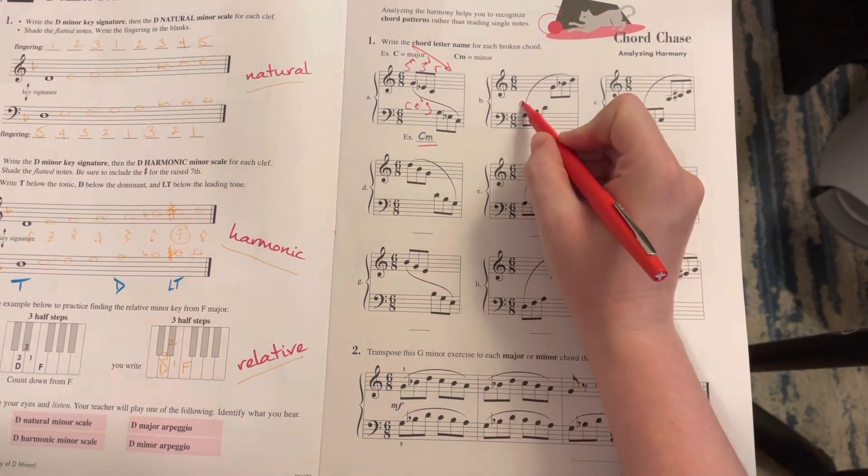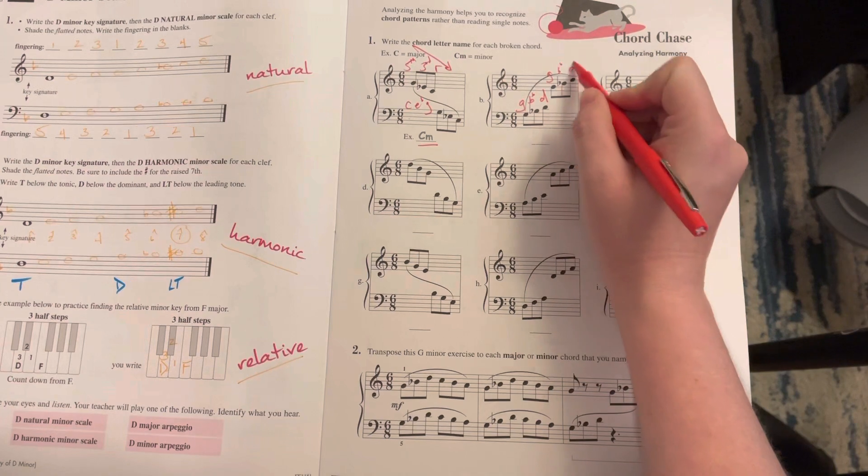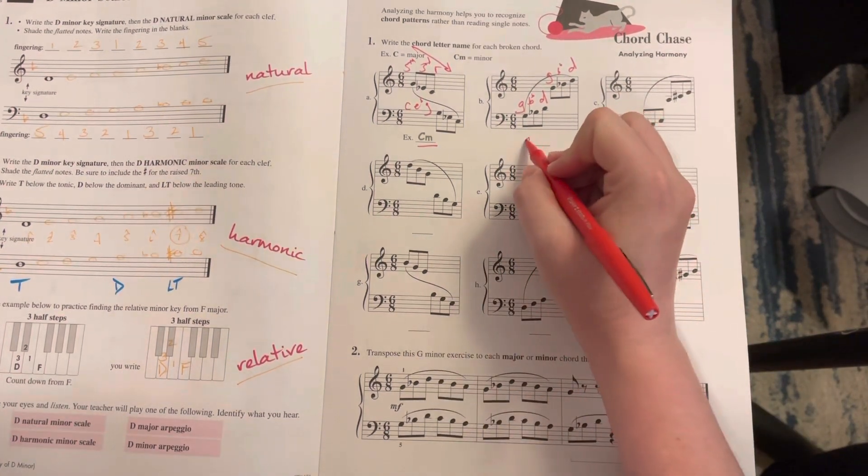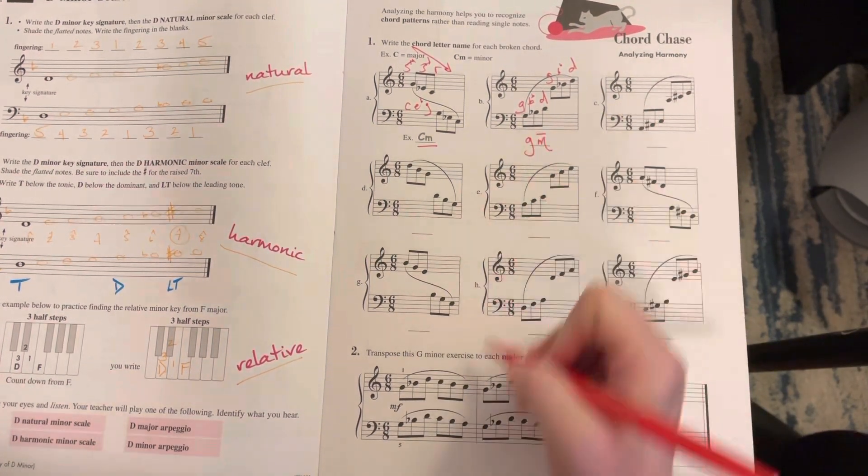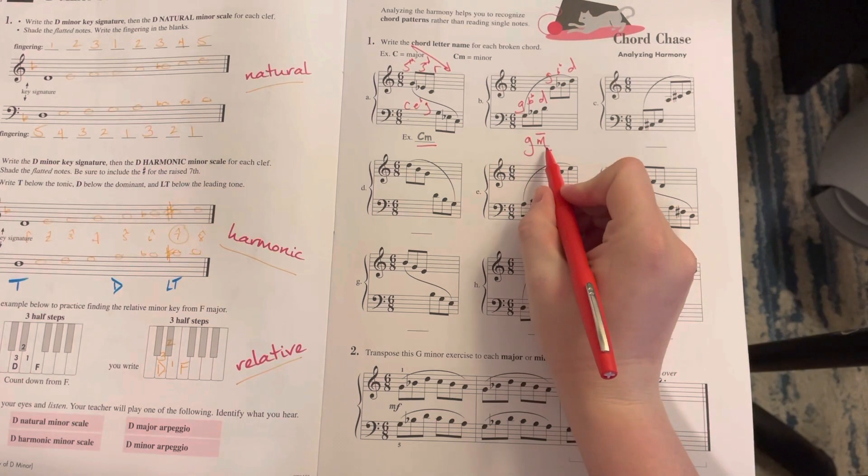Here we have G, B flat, and D - a G minor chord. I like to put a line over top of my m here so that we know that this is lowercase and I'm not talking about major.